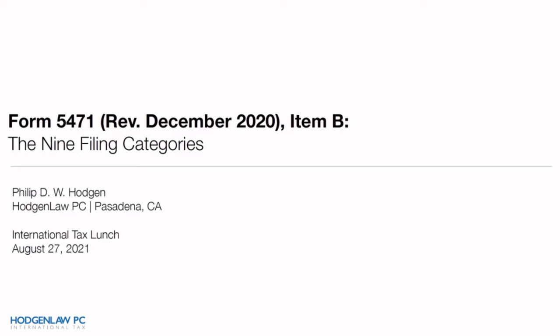This month's topic is the nine filing categories of Form 5471. Once upon a time there were five filing categories, then one fell off and there were four. Then it was revived with the 2017 Tax Act and there were five. And now this year on Form 5471, there are nine. This is a high-level overview of what those nine filing categories mean and how you know whether the taxpayer you're working on fits into one or more of them.